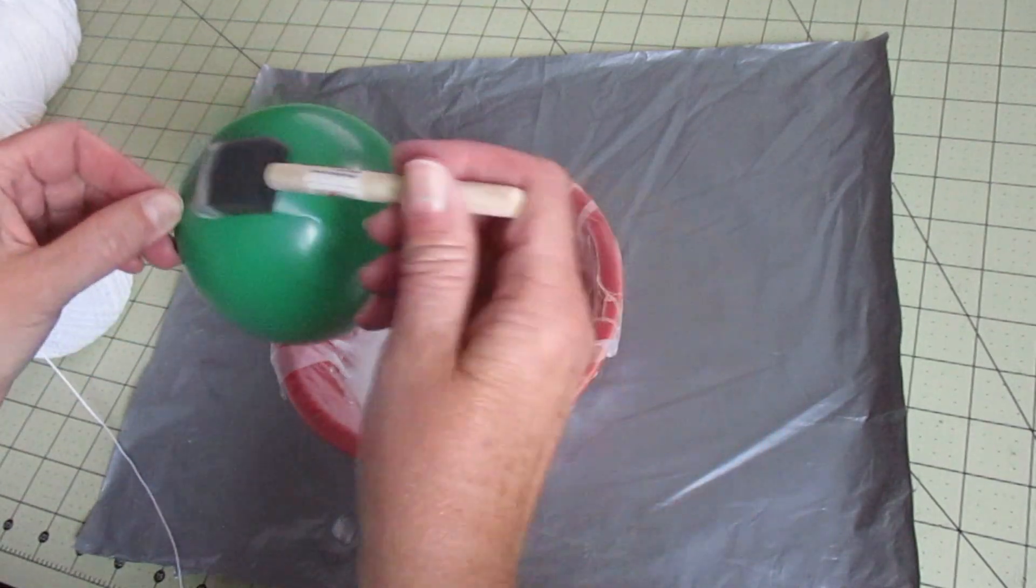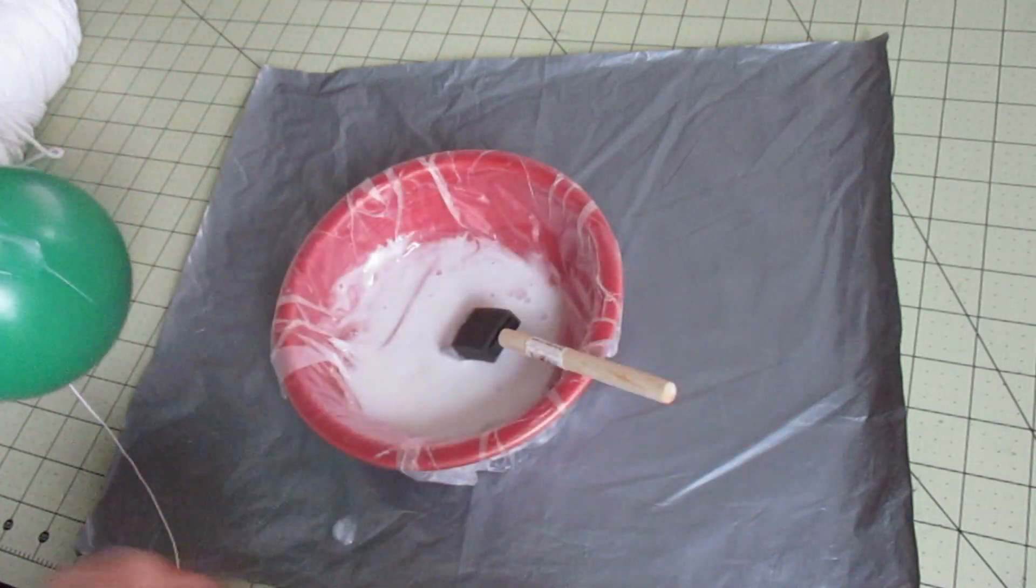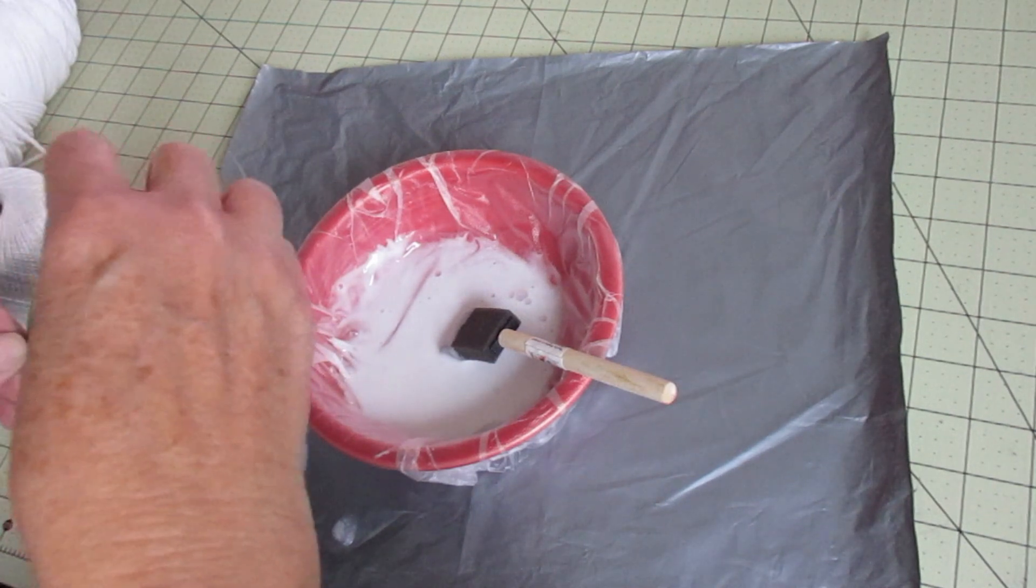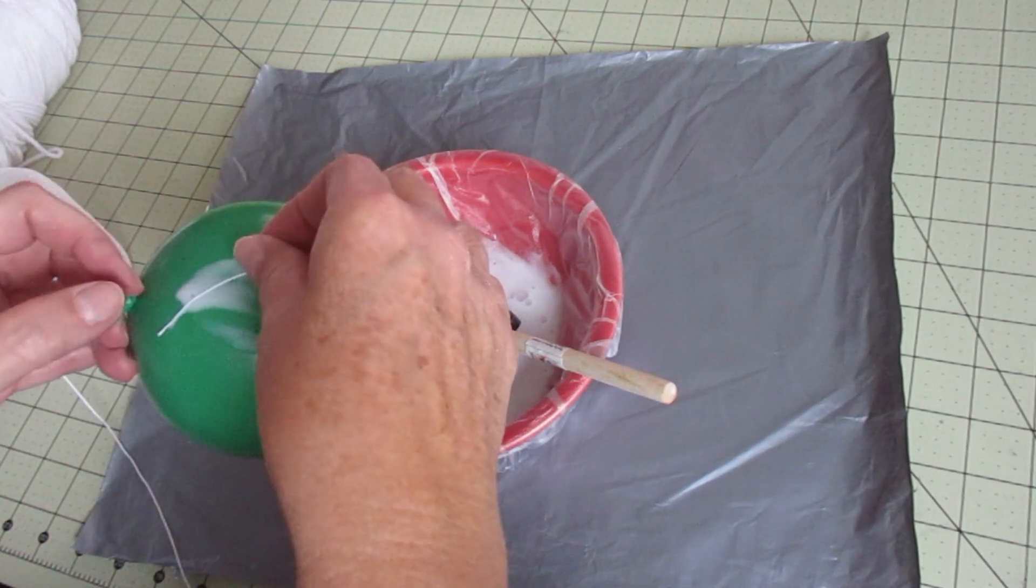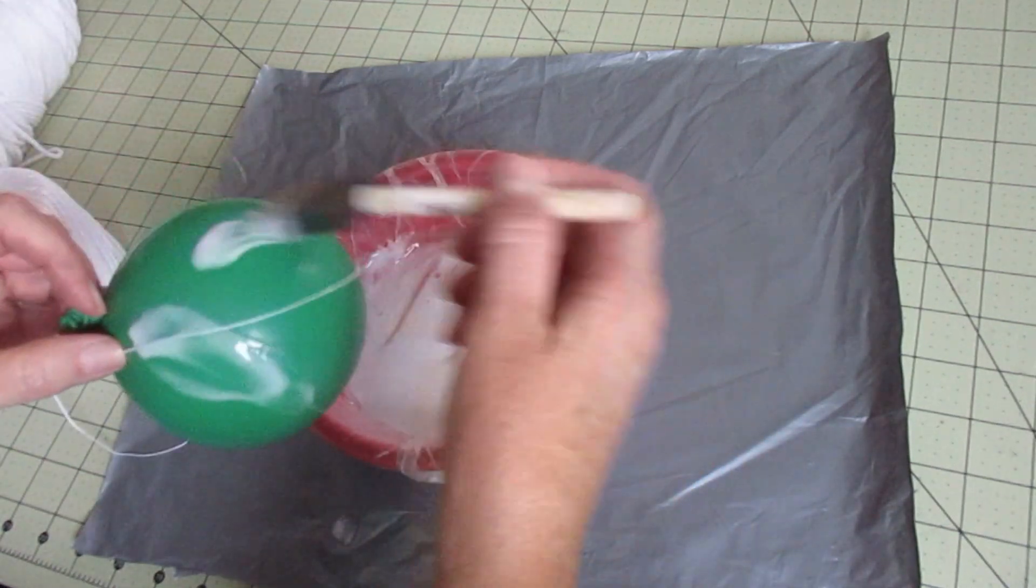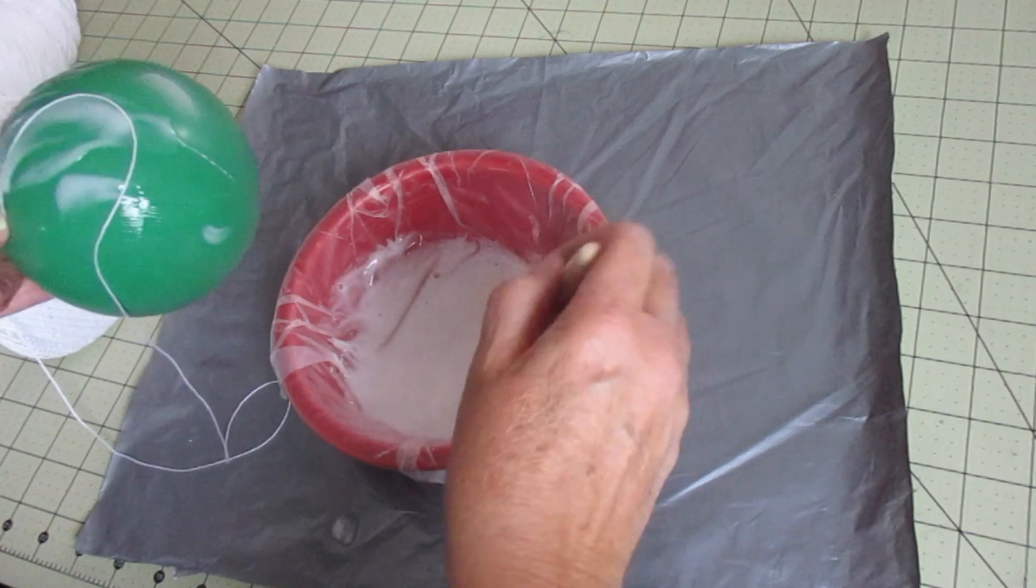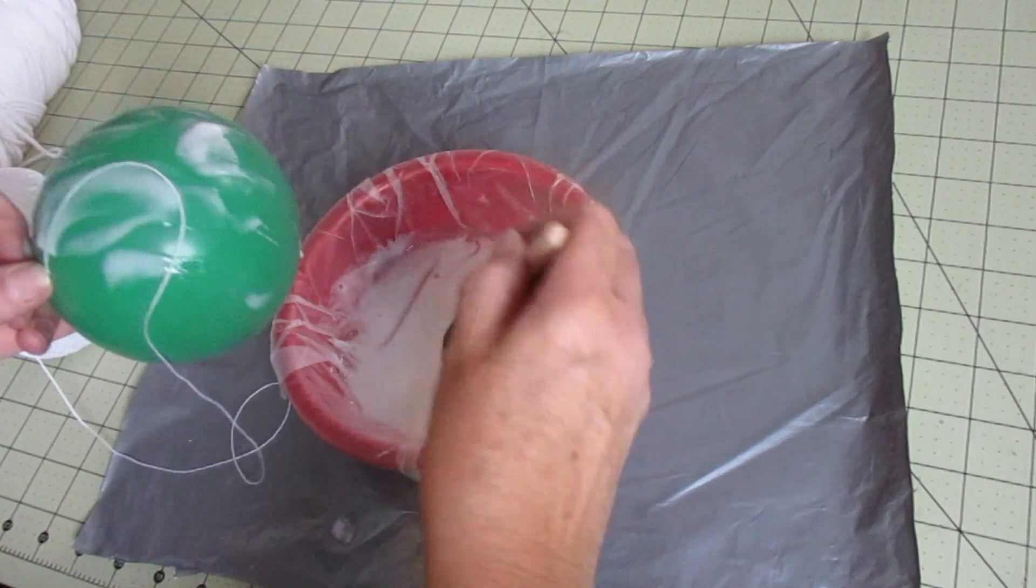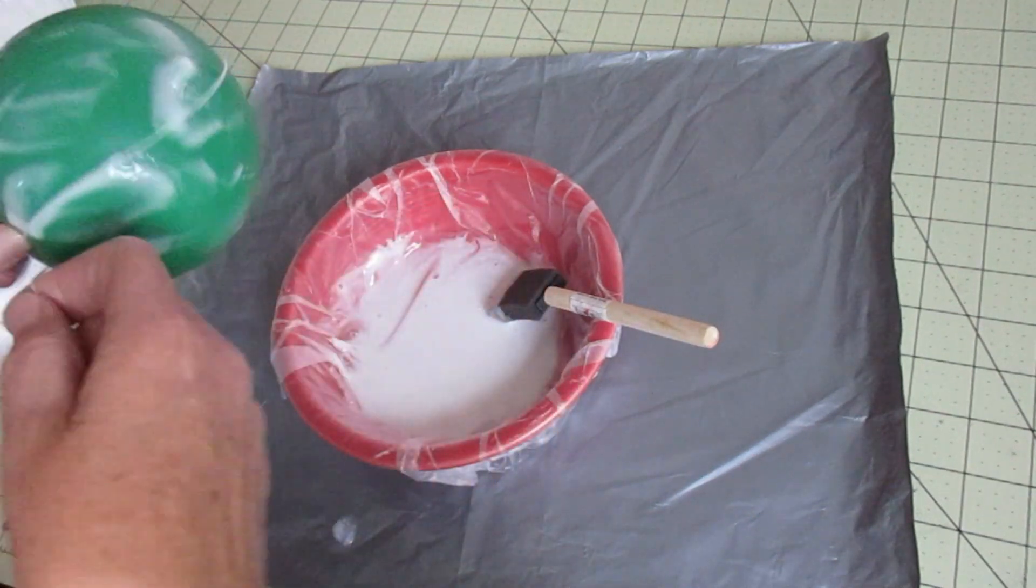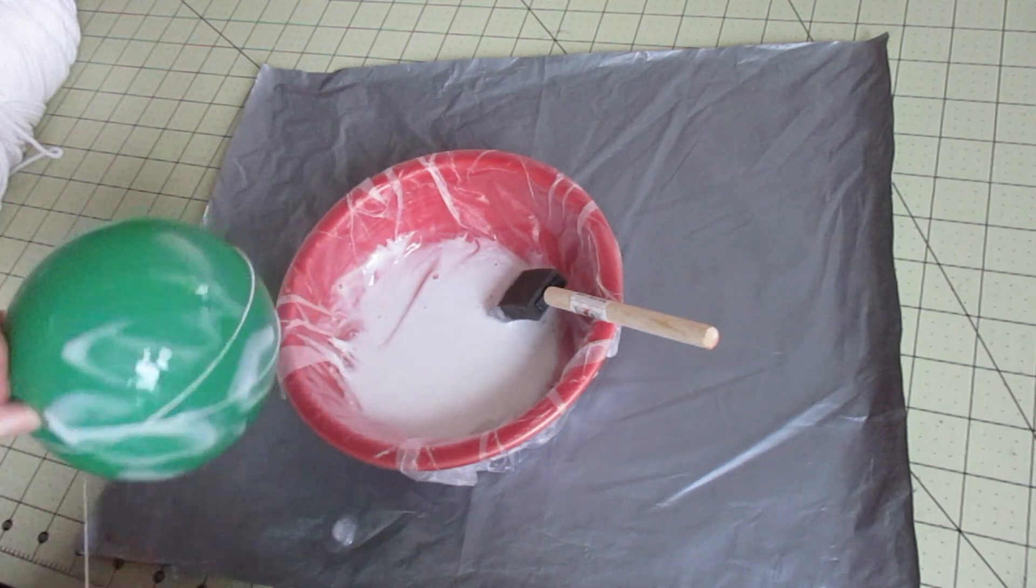I'm going to first just paint a little bit of this on just real quick so I can get my string started. Now you could paint this whole thing if you wanted but I found I don't need to because I'm actually going to dip this whole thing into this glue mixture. That's why I have a shallow bowl. Go ahead and just start wrapping your balloon randomly.